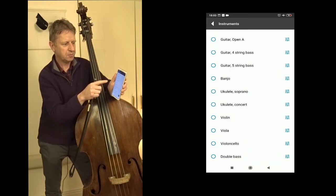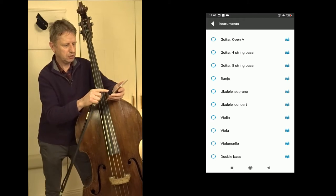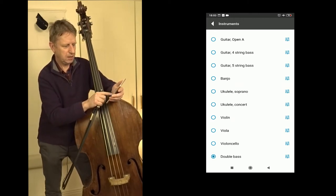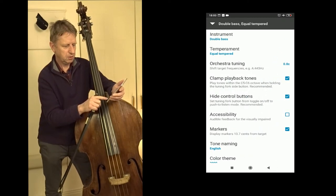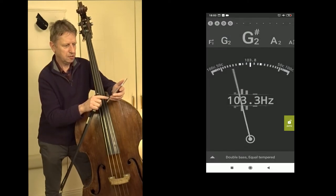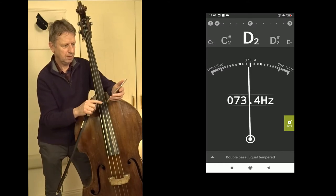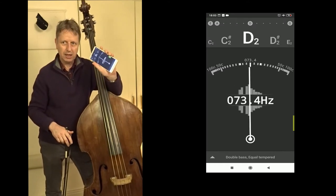The other setting I'm going to go at is I'm going to go to instrument at the top here and I'm going to put that to double bass. It may not matter too much if you do this, but if it's not working terribly well, put it to double bass. So press the back button again, there we are back at the tuning app.